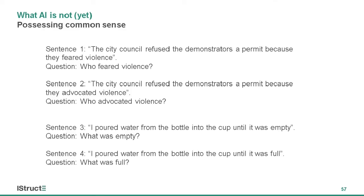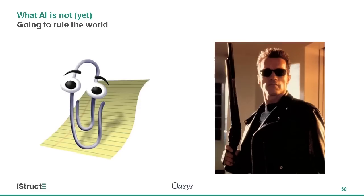There's also common sense — a knowledge of the world which is learned from being in the world. To understand certain questions you need experience. An AI might recognize the words and how they connect grammatically, but it doesn't understand meaning. And while stories of created things rebelling against their creator have been with us for thousands of years, AI doesn't have emotions or feelings. The world is more at risk from artificial stupidity.